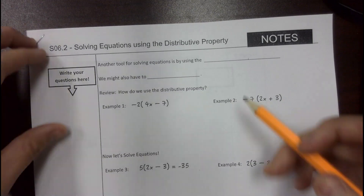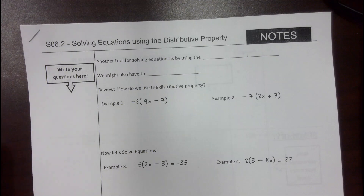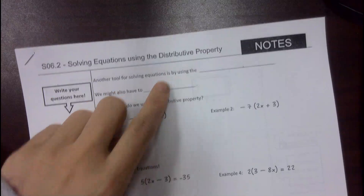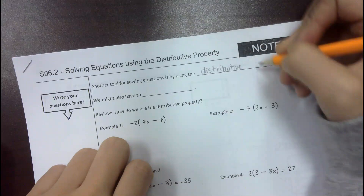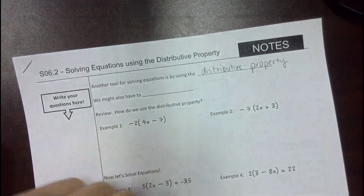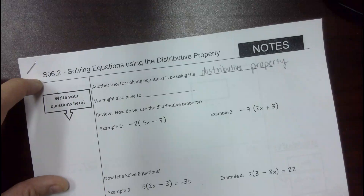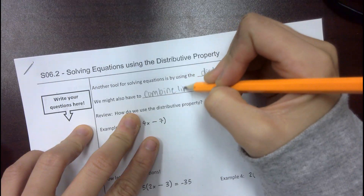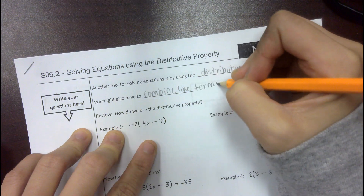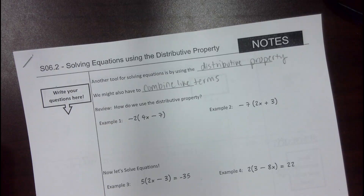So this is just like 6.1 except with more steps. Another tool for solving equations is using the distributive property. We learned this back in 4.2 or 4.3. In addition to the distributive property, we might also have to combine like terms — that's what we did in 6.1. Now that you know how to combine like terms, I can throw any question that includes it and you should still be able to do it.